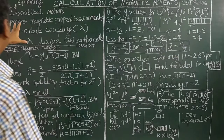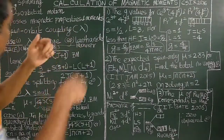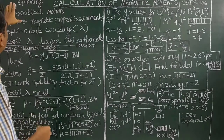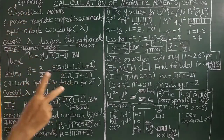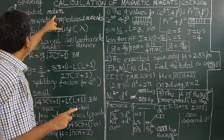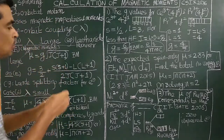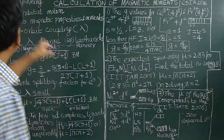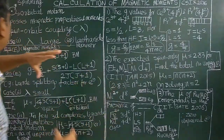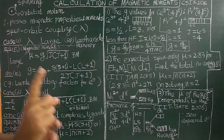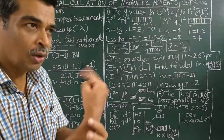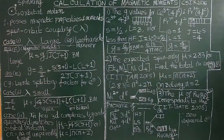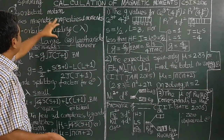First, consider an electron revolving around the nucleus — that type of motion is orbital motion. The electron also spins about its own axis; it can spin clockwise or anticlockwise. So there are two types of motion: orbital motion and spinning motion.